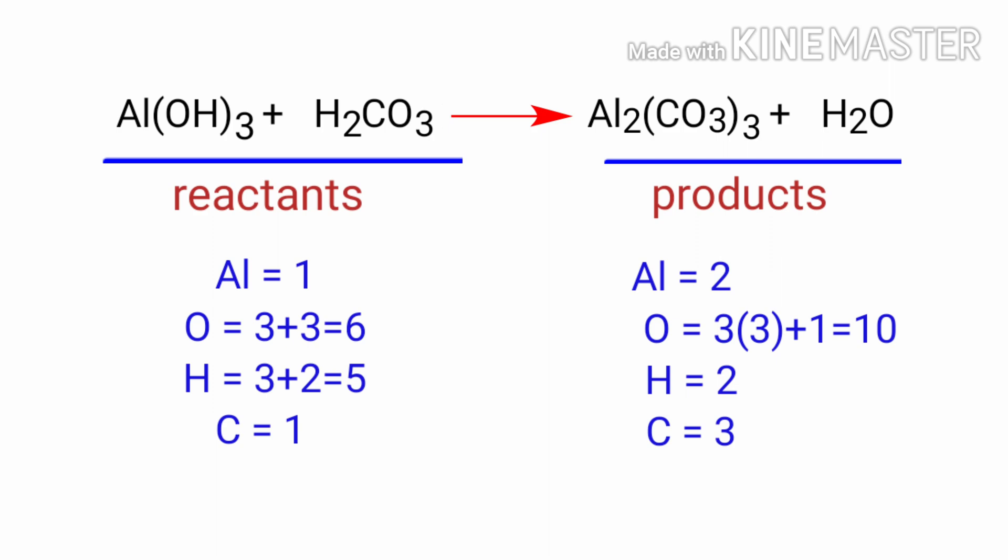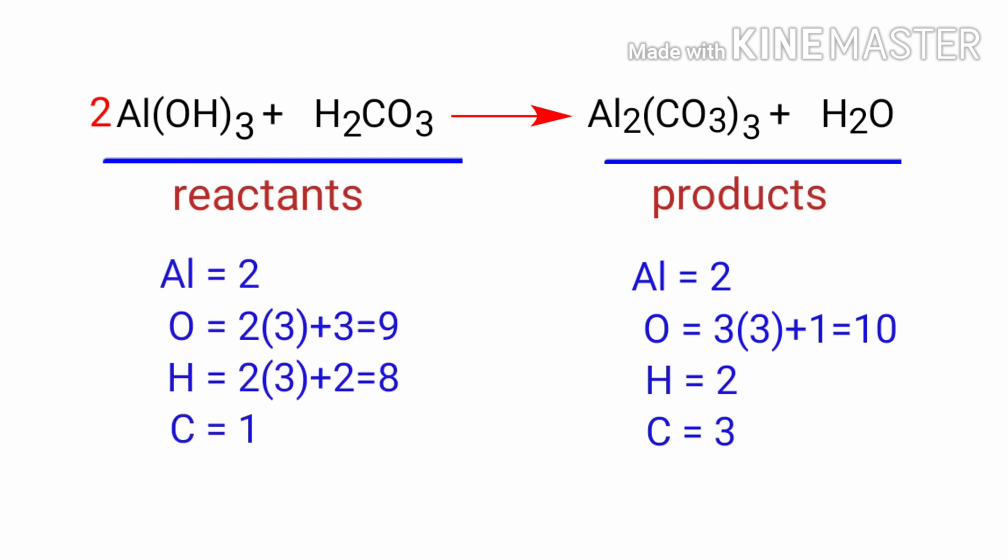In this equation, we need to balance the aluminum atoms first. To do this, we need to put a coefficient of 2 in front of Al(OH)₃. The aluminum atoms are balanced.